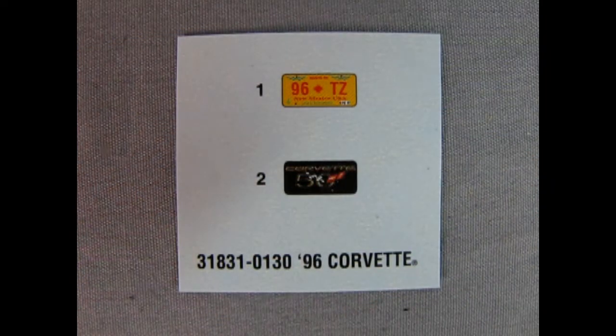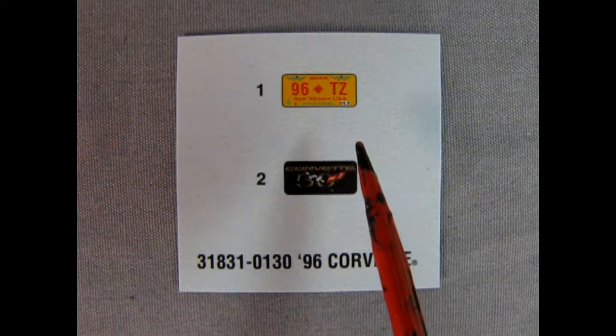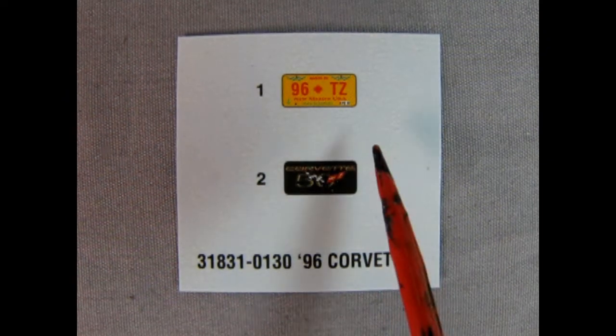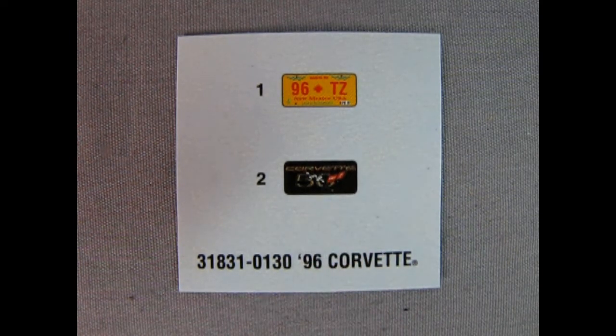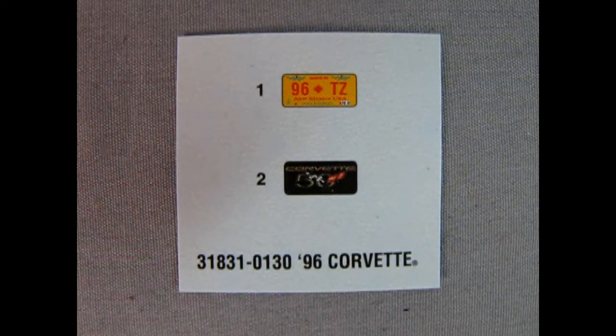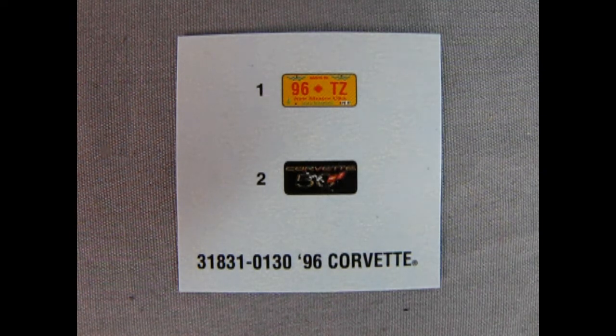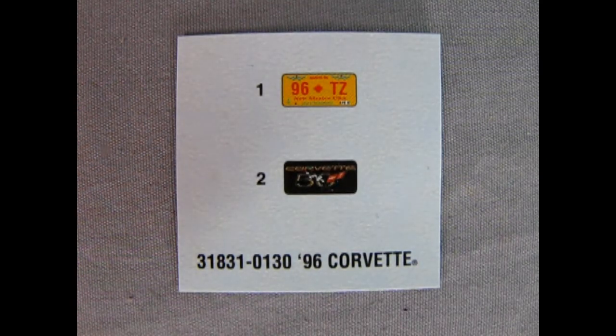Here we have our license plate decals. These are the only decals in the kit. So you get these wonderful New Mexico '96 TZ decals and you also get a 50th anniversary Corvette license plate decal. Hey, Trevor, how come in this video we're being all silly? Well, Danny, that's easy. It's because we've seen so many of these Corvette C4 videos and they're almost all the same model in the box. So I thought we'd just goof it up a little bit on our last video of the C4 Corvettes. Well, that sounds like a good idea.